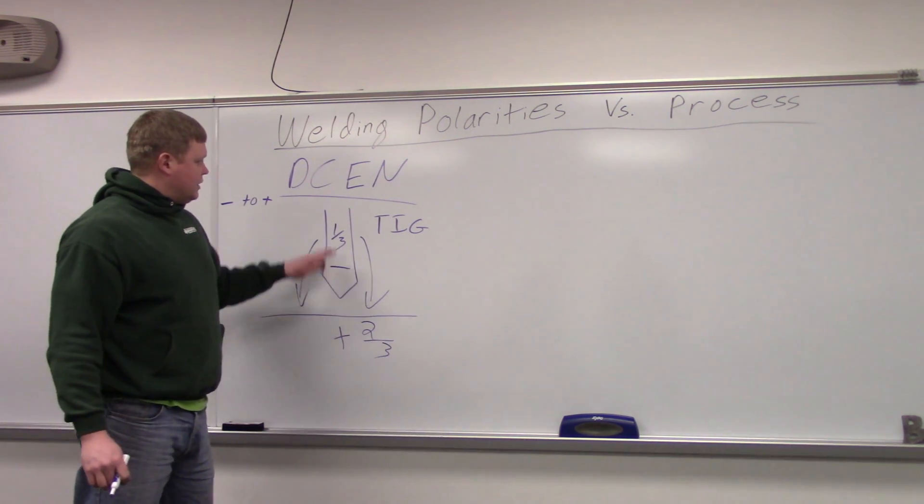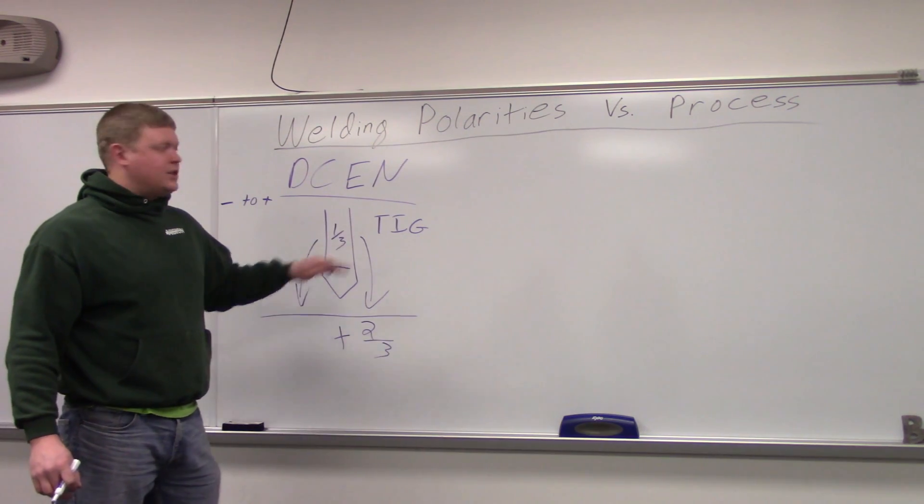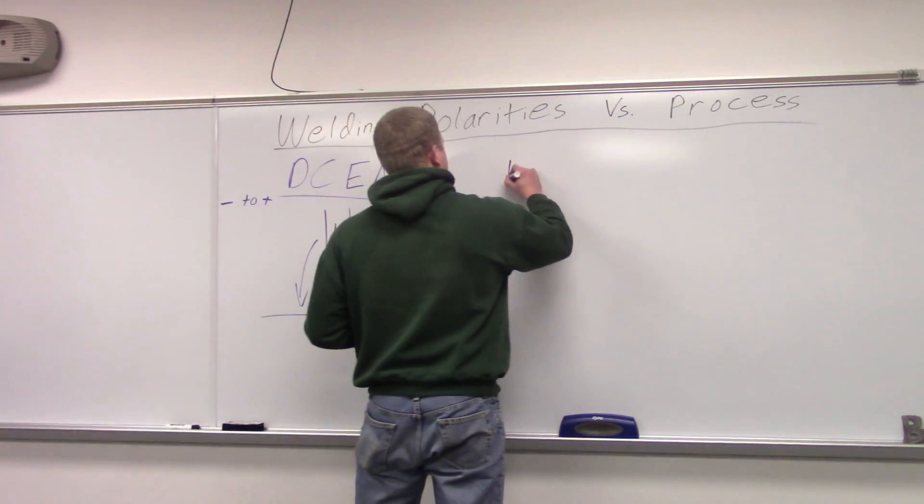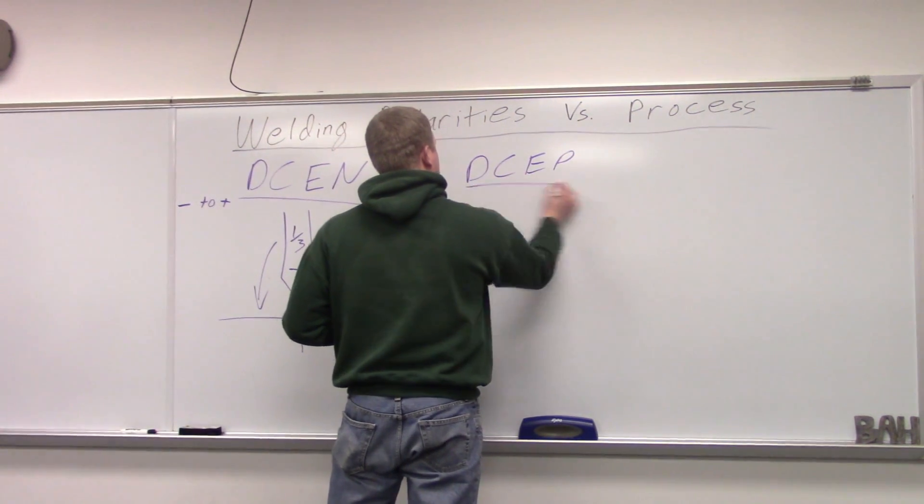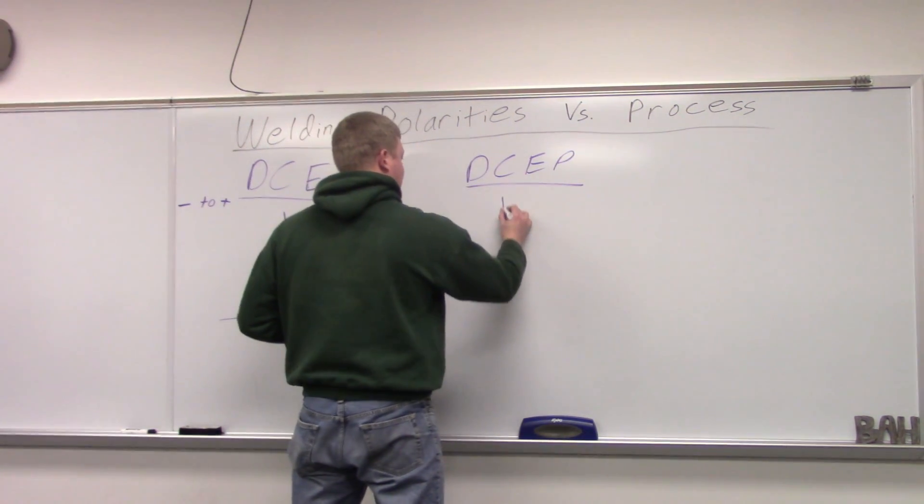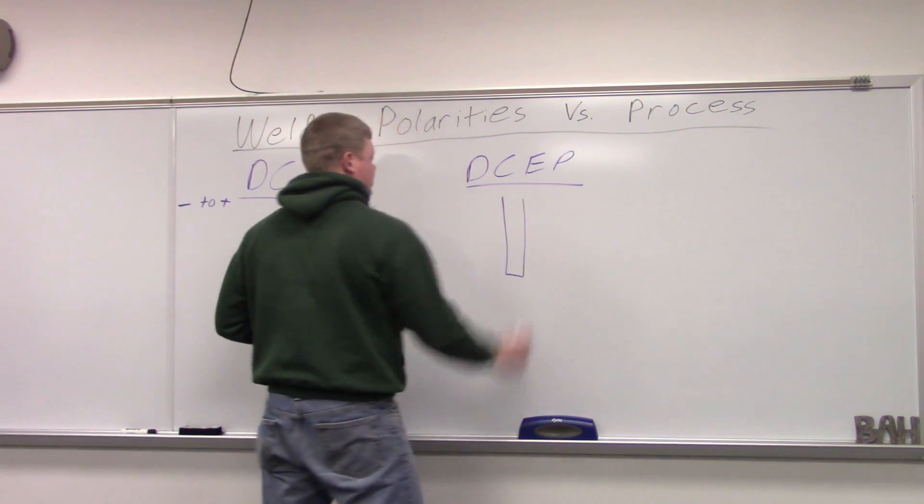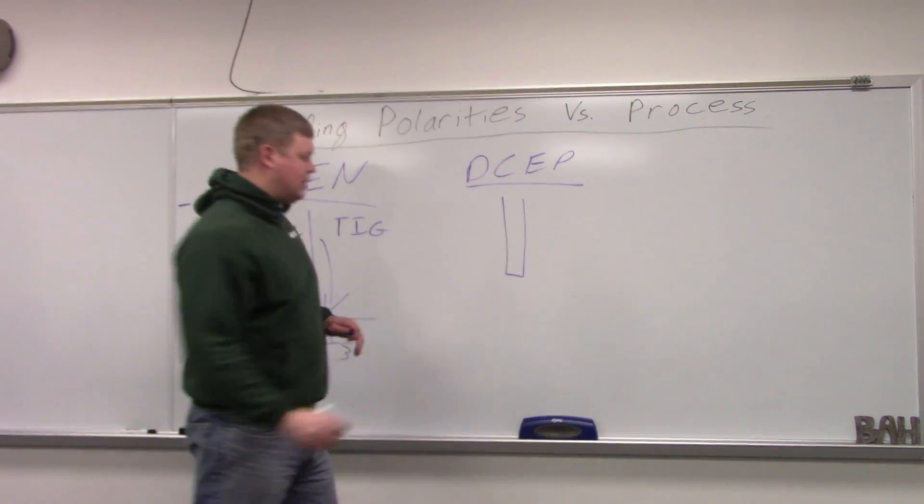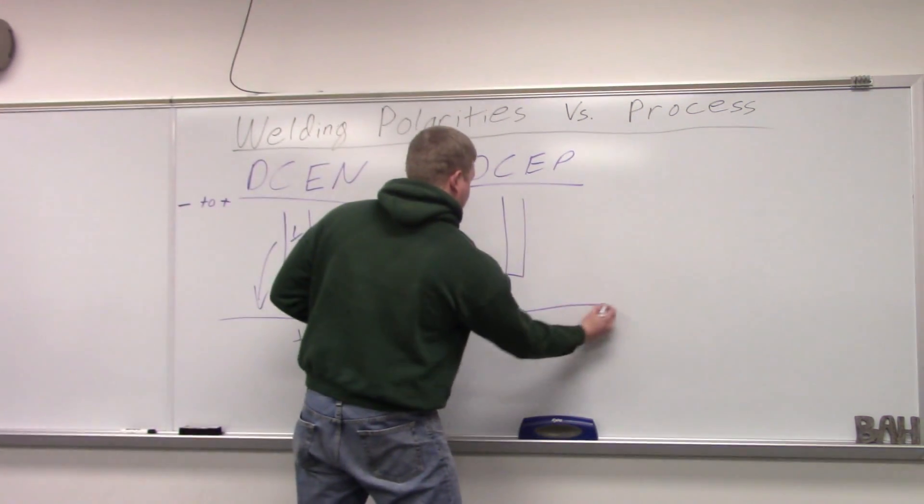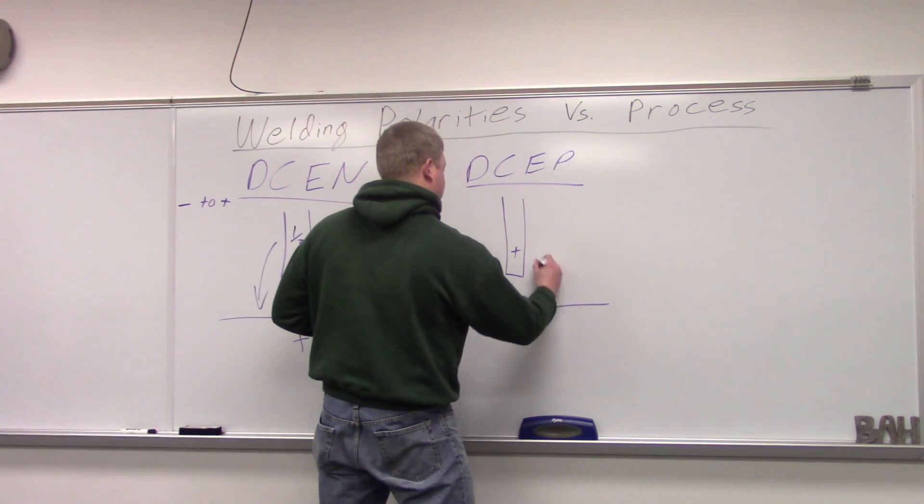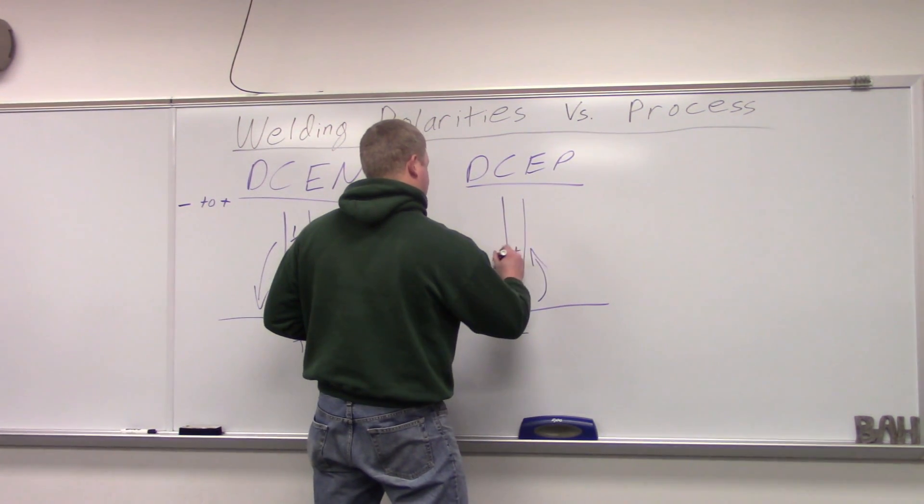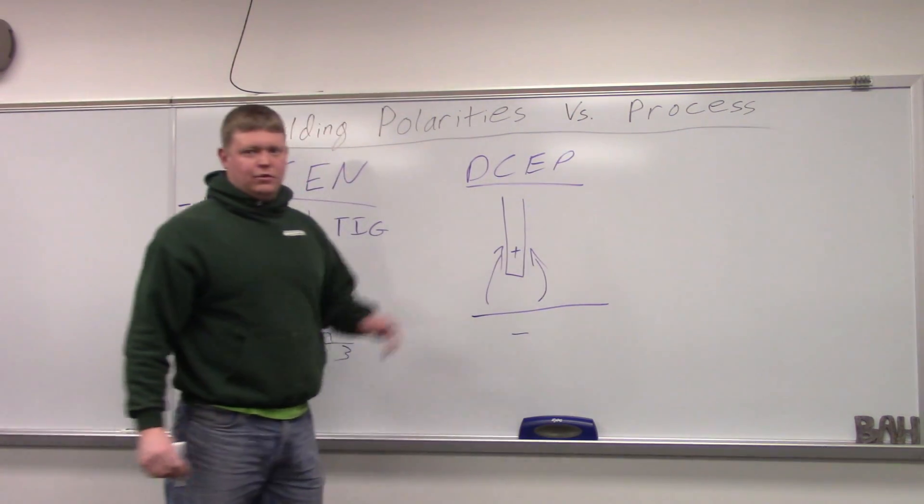If you reversed it and went direct current electrode positive, which is the next polarity, let's just say we're going to use a stick electrode here because that's what you're going to use it for, stick welding. We're going to be positive up here, negative down here.